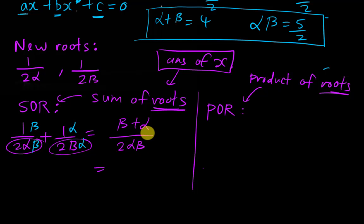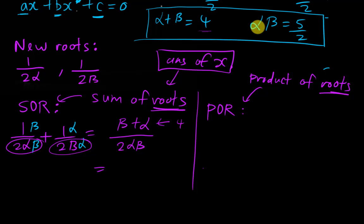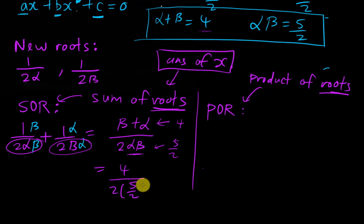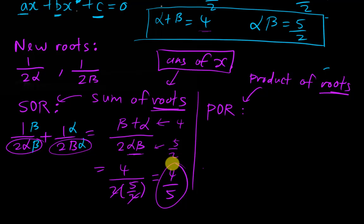You can't leave it unsimplified because you need a value to form the new equation — that's the purpose of finding sum and product of roots at the beginning. Alpha plus beta equals negative 4 and alpha times beta equals 5 over 2, so substituting: numerator is negative 4 and denominator is 2 times 5 over 2, giving negative 4 over 5. This is the new sum of roots.